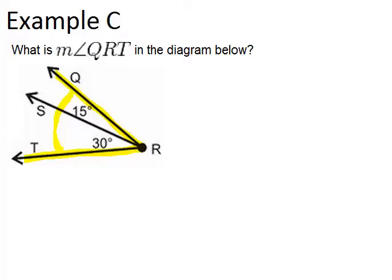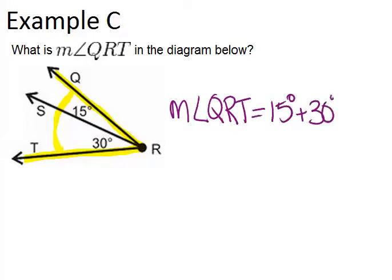According to the angle addition postulate, if you know the two smaller angles, you can add them to find the measure of the whole angle. In this case, the measure of angle QRT equals 15 degrees plus 30 degrees, which is 45 degrees.